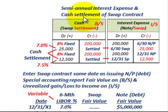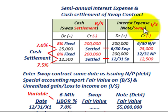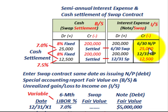Now let's look at how we record the semiannual interest expense and cash settlement. For the first period (6/30): debit interest expense $200,000 and credit cash $200,000 for the fixed rate payment on the notes. Then, upon receiving the $25,000 cash settlement based on the 7% variable rate, we credit interest expense by $25,000 to reduce it. The cash received from the swap reduces your net interest expense.